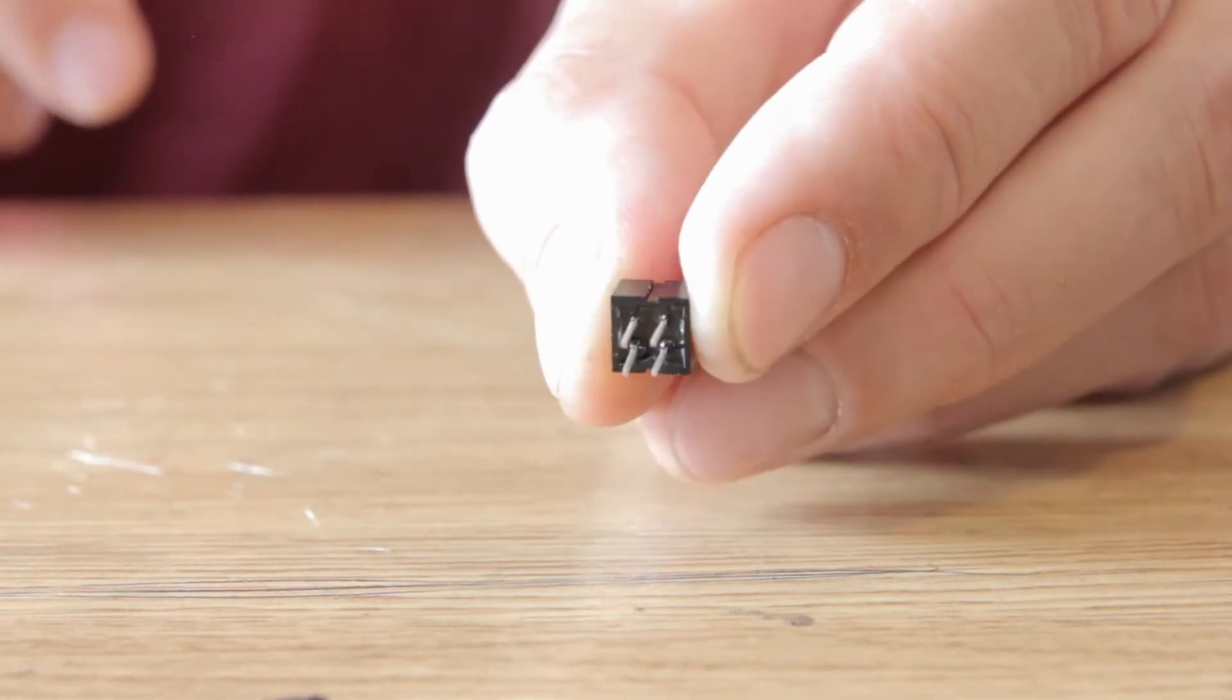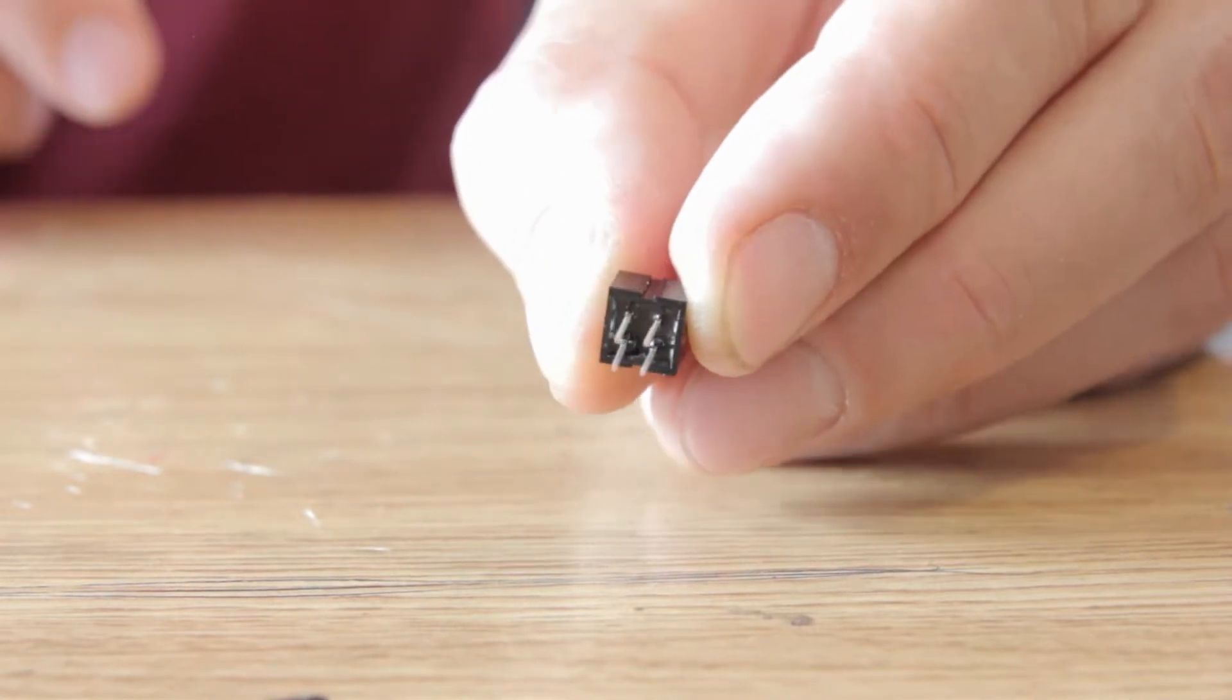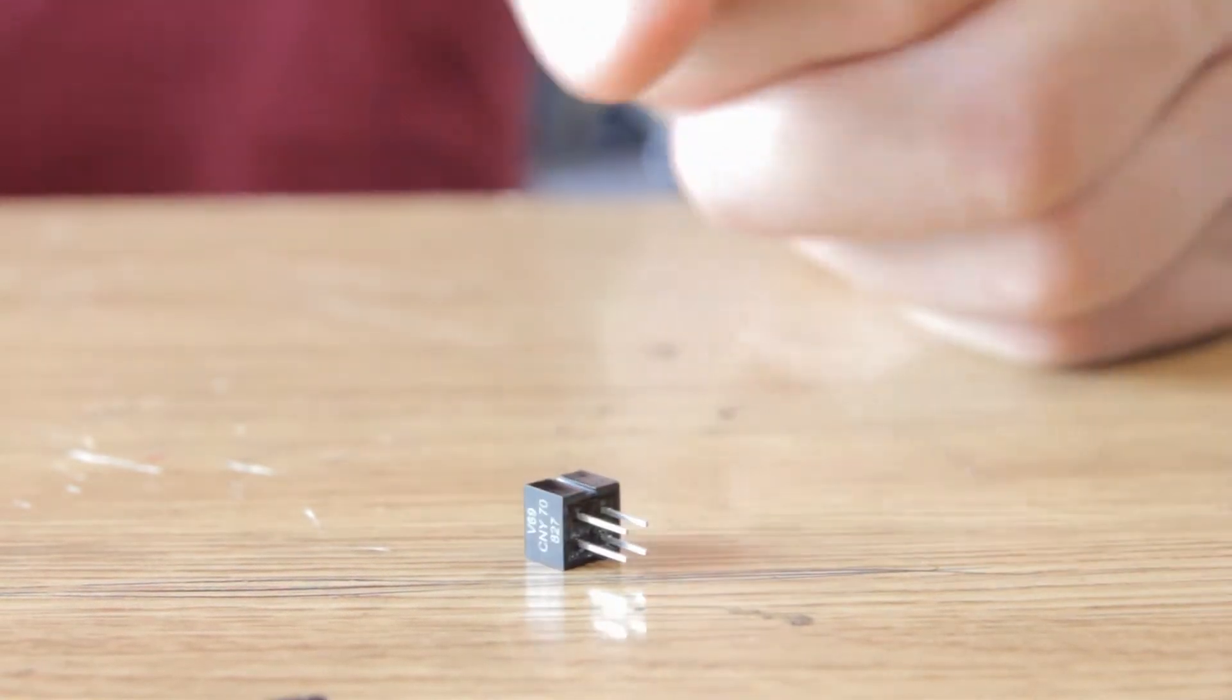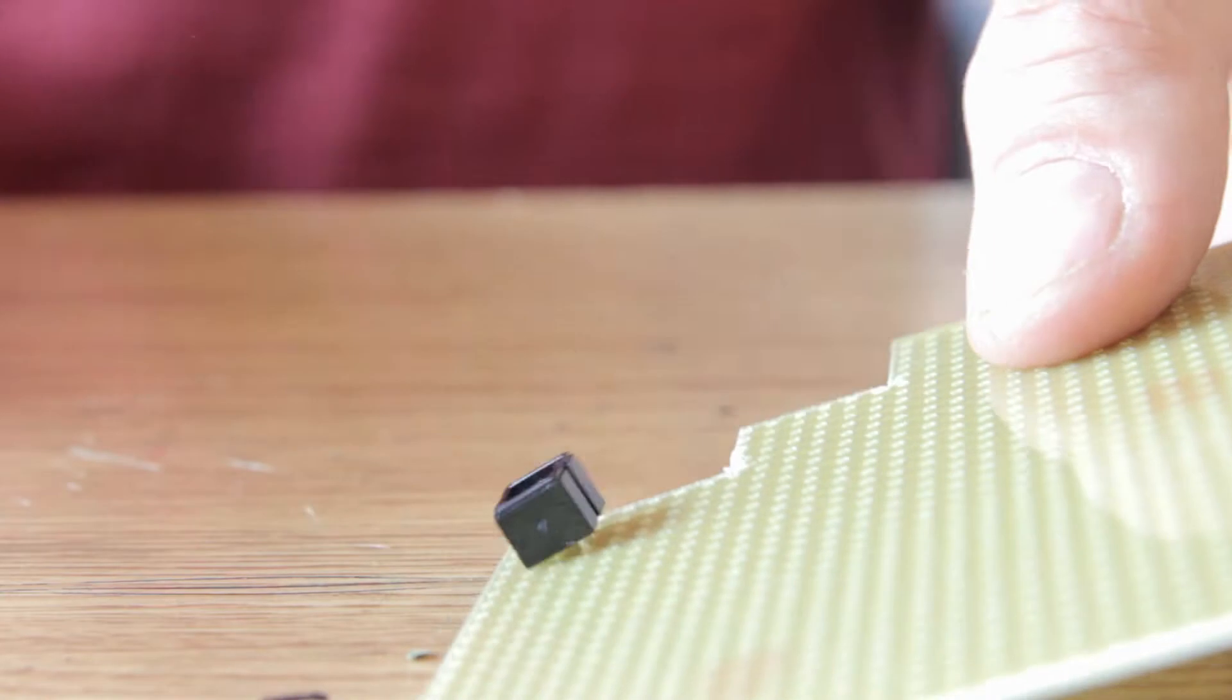There are two pins which go to ground. They are diagonally across from each other. The other two pins are 3V and sensor signal respectively.